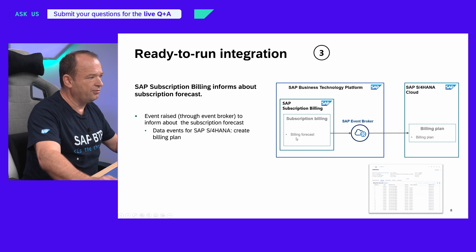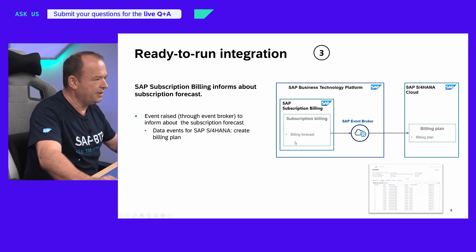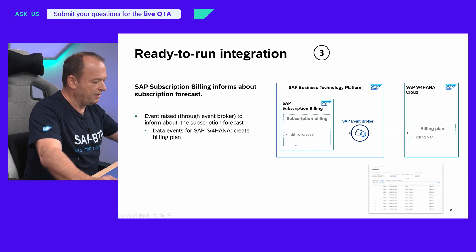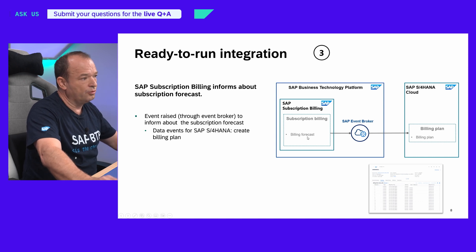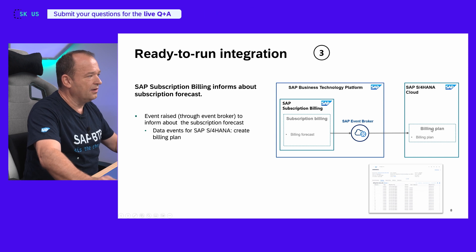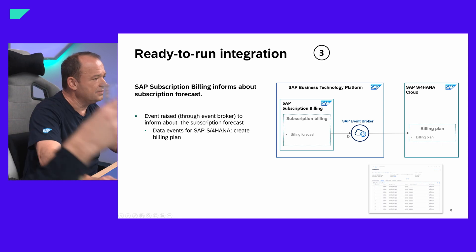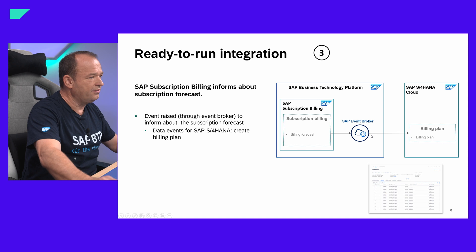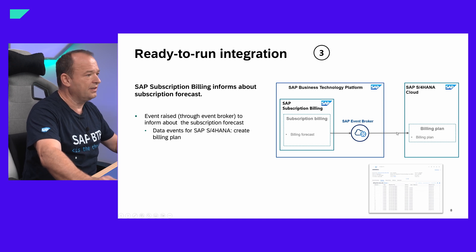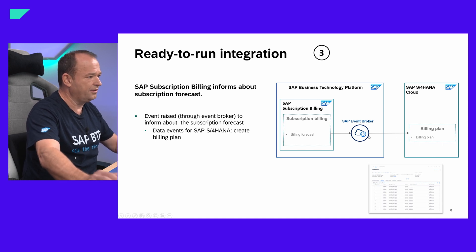The next step is to create the billing plan. This was not explained in detail in the demo but happens in between — we have a billing forecast in subscription billing, managed automatically. At this point we use the event broker again: 'I have a new billing forecast, please update.' The data events then create the billing plan. By the way, these are not notification events but data events — so it is always an activity that happens directly in SAP S4HANA Cloud, with APIs called for this.